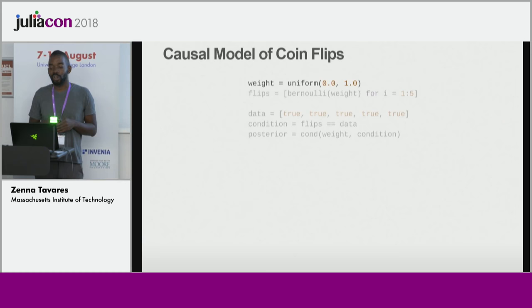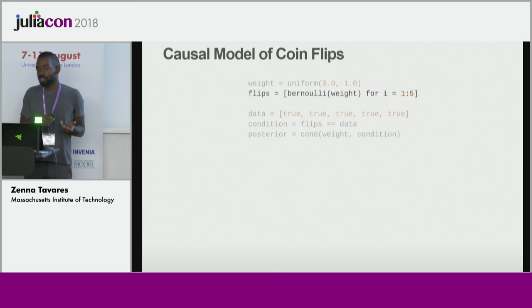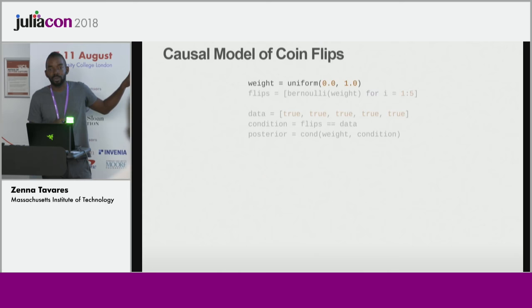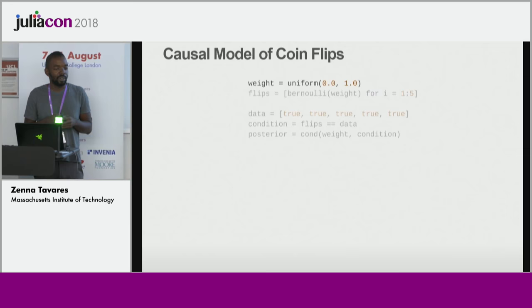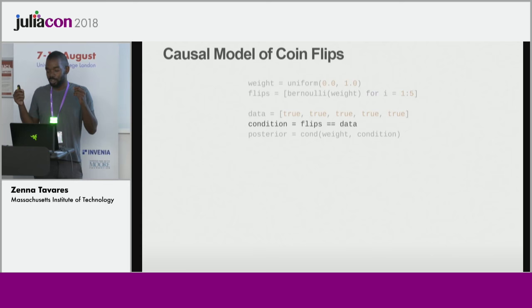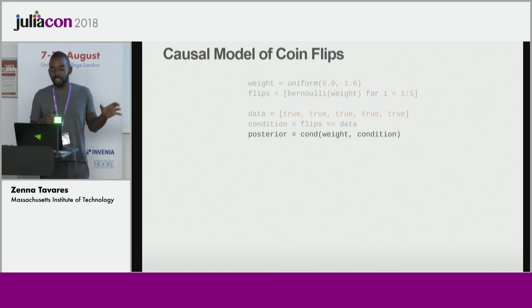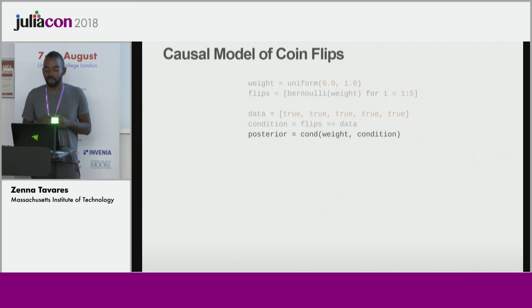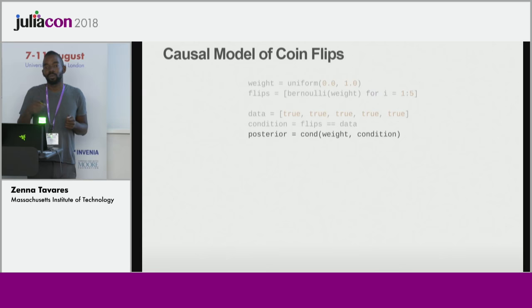Let's model this as an Omega program. In Omega you define distributions, and in this case we model the coin as a Bernoulli distribution — true or false with some probability. Rather than being a constant, the weight is uniformly distributed, meaning it could be anything between zero and one with equal probability. Our data is a sequence of coin flips, and we define a condition saying our flips equal our data. The posterior distribution is created using the cond construct, which finds the conditional distribution of the weight given the condition.